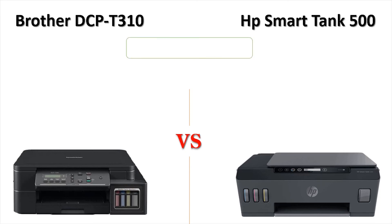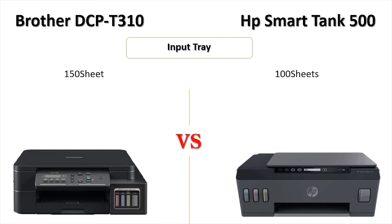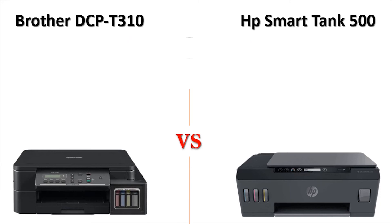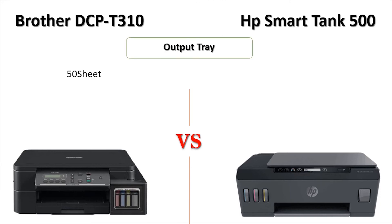Input Tray — Brother DCP T310: 150 sheets. HP Smart Tank 500: 100 sheets. Output Tray — Brother DCP T310: 50 sheets. HP Smart Tank 500: 30 sheets.